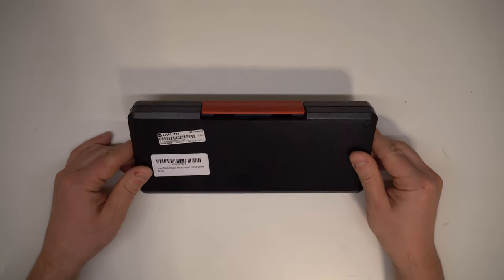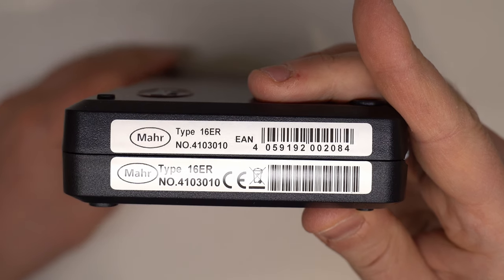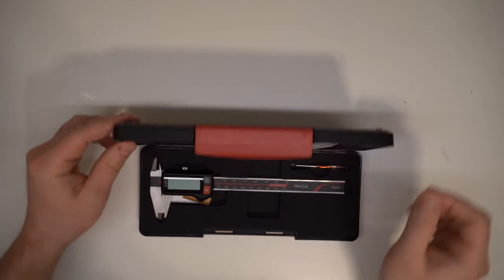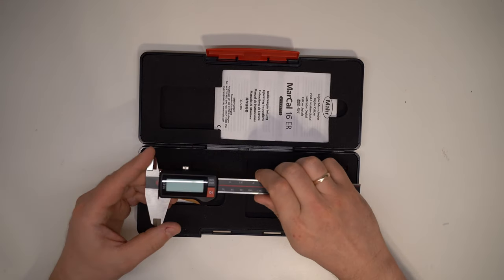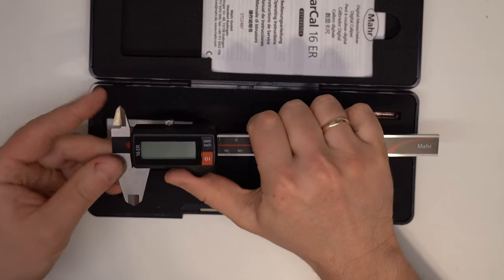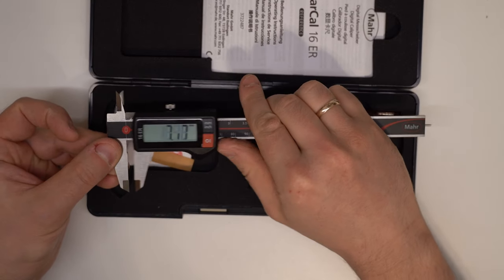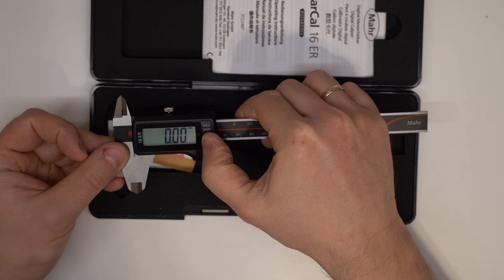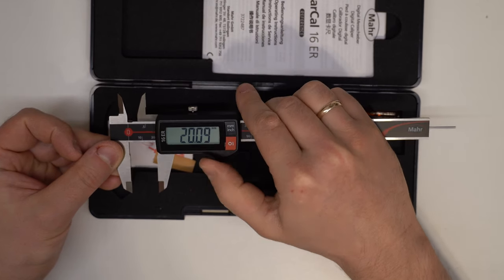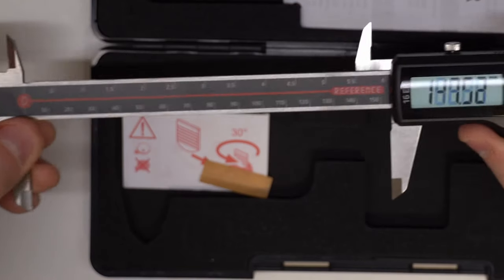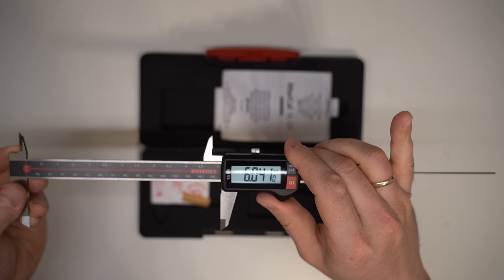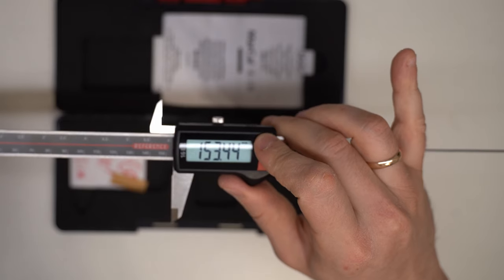Hey folks, wanted to show you this awesome R caliper model 16 ER. It turns on automatically and has the relative measurement function. Just click the on-off button to reset to zero. It also supports inches. Maximum distance is 6 inches or 153 millimeters.